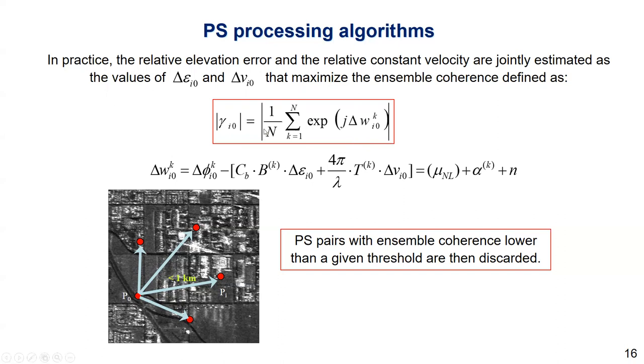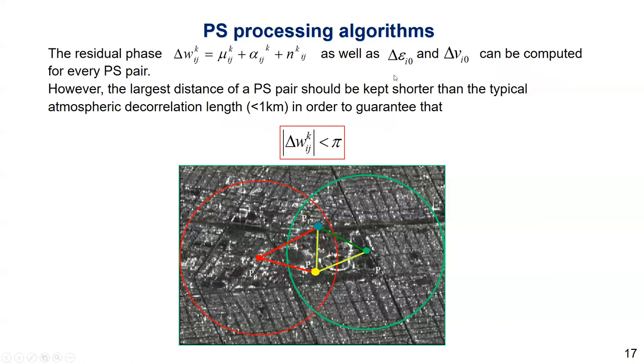Basically, the coherence, the absolute value of the coherence should vary from 0 to 1. Basically, a coherence value of 1 means the complete fit of the observed and the modeled phase. And if the sample coherence of a pixel, if the coherence of PS pairs falls below a certain given threshold, usually we like something like 0.75, it will then be discarded during the processing so that the data will be high quality. In this way, the phase residue as well as the delta epsilon and the delta V can be computed for every PS pair.